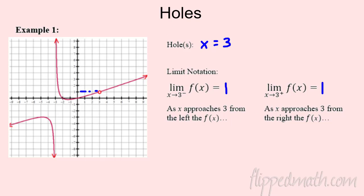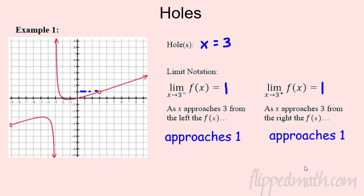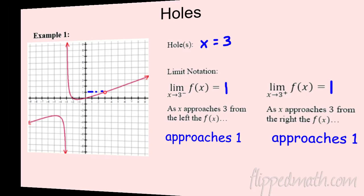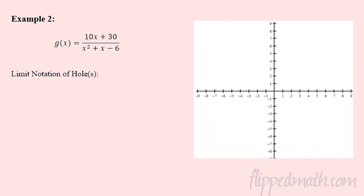So it approaches 1 as I come in from the left, and as x approaches 3 from the right, it too is approaching 1 — the function approaches 1. We're just putting some formal limit notation with a hole. Great, let's take another example.